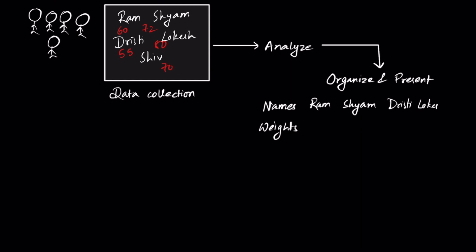...Lokesh, and finally Shiv. And their respective weights are 60 kg, 72 kg, 55 kg, 70 kg, and 80 kg. All of this is present inside a table.